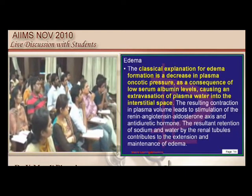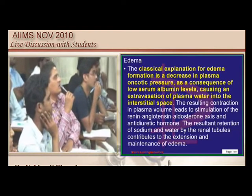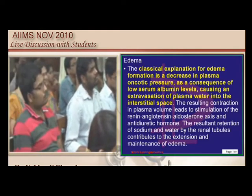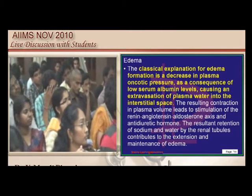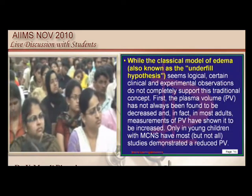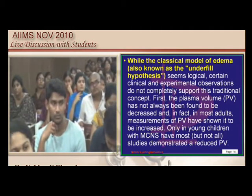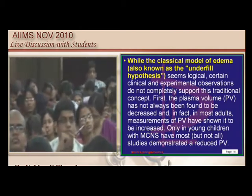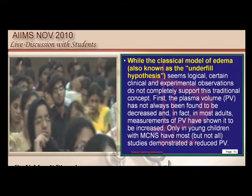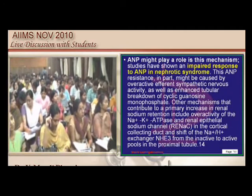In nephrotic syndrome, the atria are unable to produce ANP adequately, and the ANP produced cannot act on the kidneys, so there is no natriuresis — resulting in salt retention. The older concept of low oncotic pressure is considered obsolete; the ANP sensing and salt retention hypothesis is more recent and consistent with current observations.